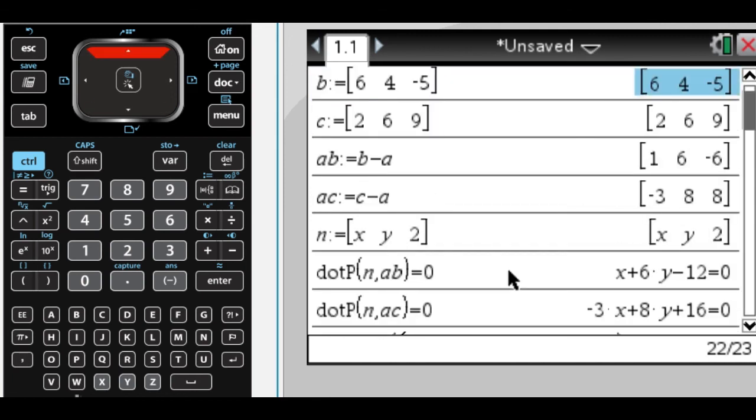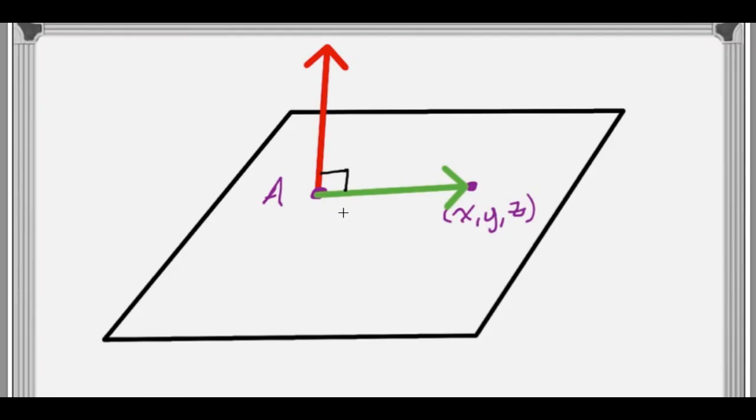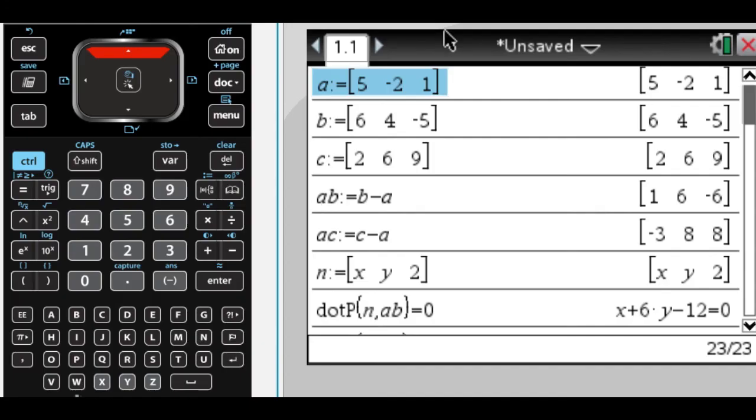So that's how I would solve this problem. Really all we need is a vector orthogonal to the plane, which we create, and a generic vector in the plane. And then the dot product of those must be 0. And that's how we get our equation. I hope you found this useful. Good luck.